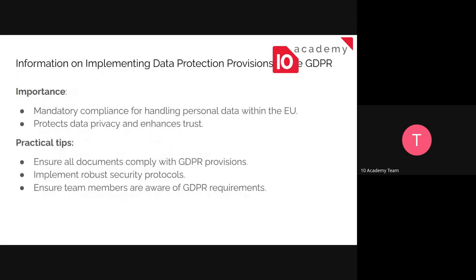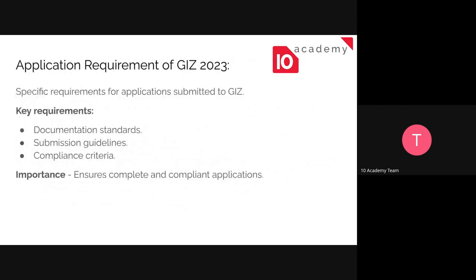The last documents are the Application Requirements — the specific requirements for applying and submitting your application to GIZ. You can see here: Application Requirements for GIZ 2023. It's just there to show the document standard, submission guidelines, and compliance criteria. You need to follow these standards and guidelines when you submit your bid. It ensures that a complete and compliant application is provided by the bidder — the consultant — when submitting for the tender process. You need to go through this before preparing your bid because it's going to show you the standard and guidelines when doing so.